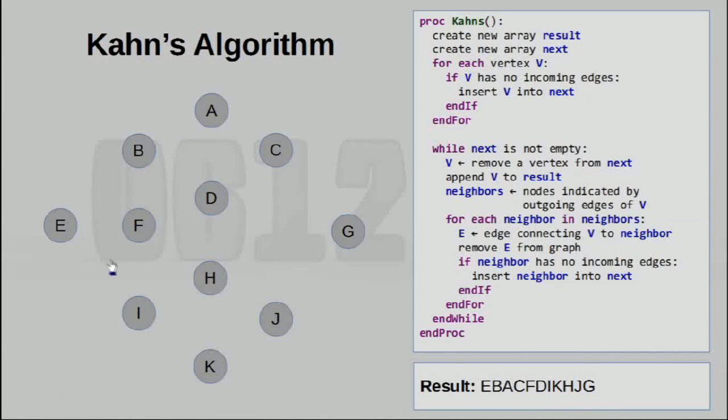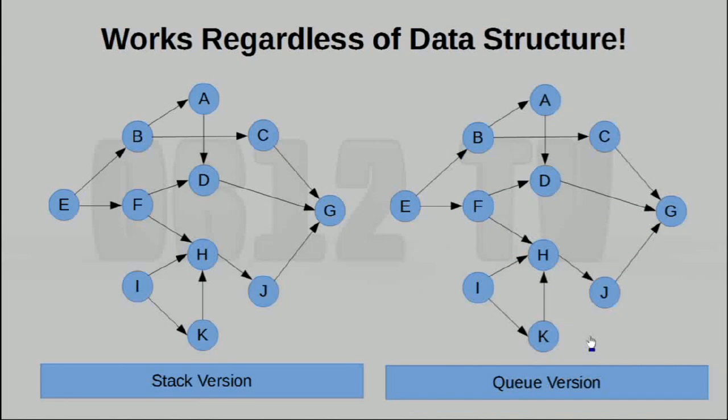So our algorithm has just terminated, and this is the result we get. Now, I'd like to draw your attention to two things. First of all, recall that in a previous episode, we said that topological sortings did not have to be unique. Second, notice that previously in the trace, I visited the nodes in a very arbitrary order. In fact, let's just go back to a random point within the trace.